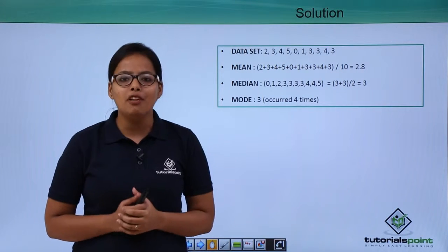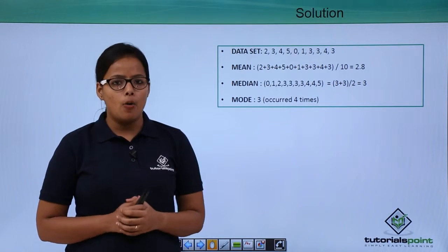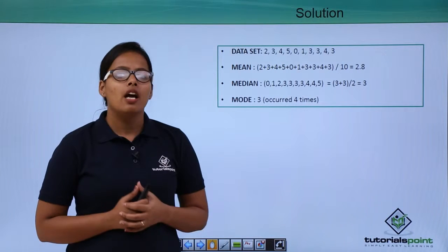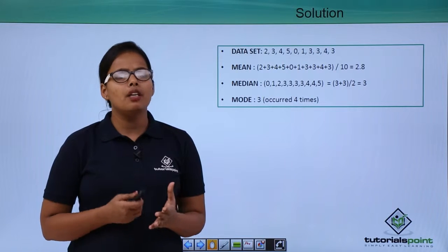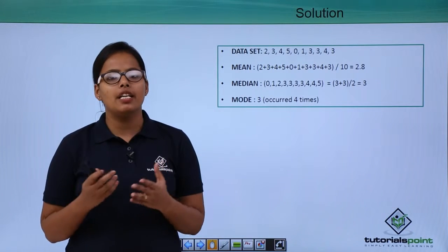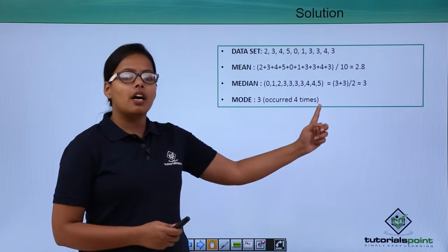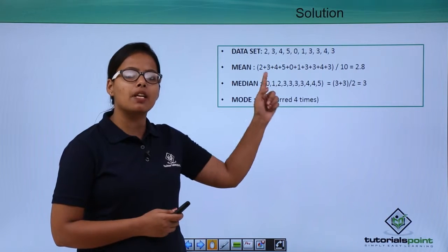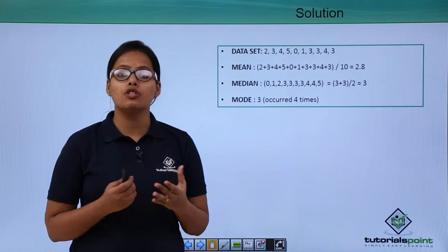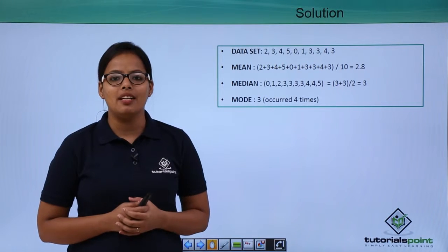So this is going to be the median for this data set. Now in the last part, what you need to find out here is the mode. Mode is nothing but the most occurred digits in a data set. As after arranging the data in ascending order, you can see that 3 has occurred the most number of times, which is 4 times. That's why 3 will be the mode for this data set.